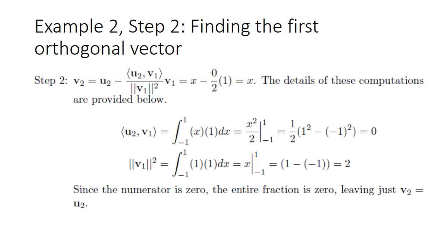The second step defines V2 as the difference between U2 and the orthogonal projection of U2 onto V1. We compute the inner product of U2 and V1 through the integral, which gives zero. The norm squared of V1 through the integral gives two. Since the numerator is zero, the entire projection term is zero, leaving V2 equal to U2, which is simply x.